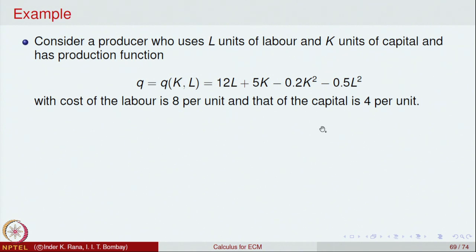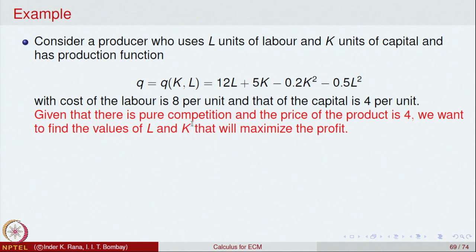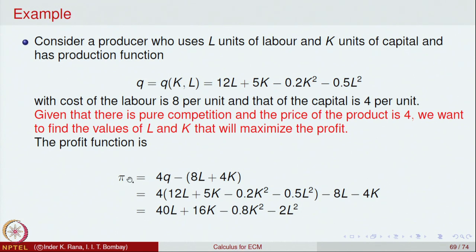Given that there is pure competition — which means the price of the product is fixed — let us say the price of the product is fixed at 4. We want to find the values of L and K that will maximize the profit. First we set up the profit function: profit is revenue minus cost. The profit function π depends on K and L.